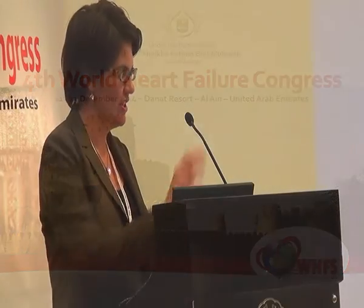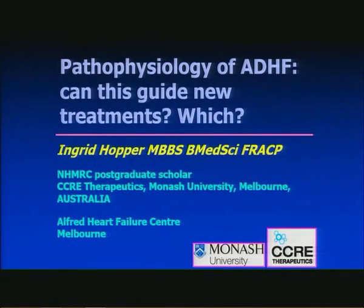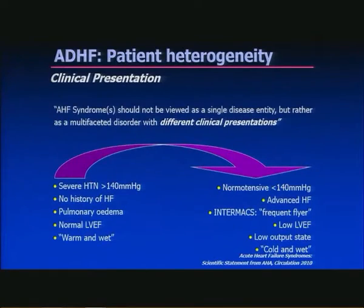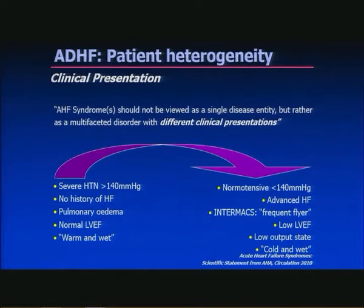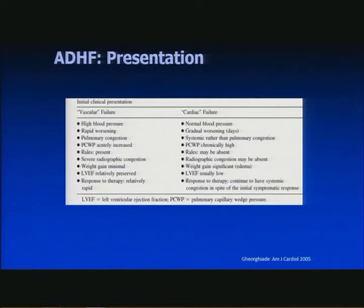Pathophysiology of acute decompensated heart failure and how this can guide new treatments. As we've already heard, acute decompensated heart failure is characterized by patient heterogeneity, and shouldn't be viewed as a single disease entity, but rather as a multifaceted disorder with different clinical presentations — the main one being hypertension or normotension — including vascular failure and cardiac failure.